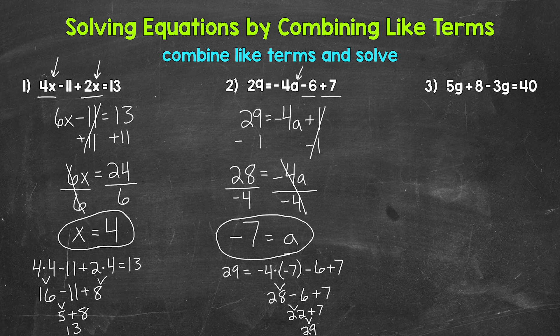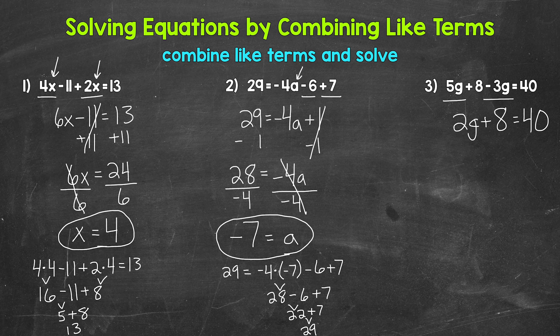For number three, we have five G plus eight minus three G equals 40. Do we have any like terms we can combine? Yes — five G and negative three G. Combining them gives us two G. So we now have two G plus eight equals 40. We've simplified the left side by combining like terms and can now solve this two-step equation.